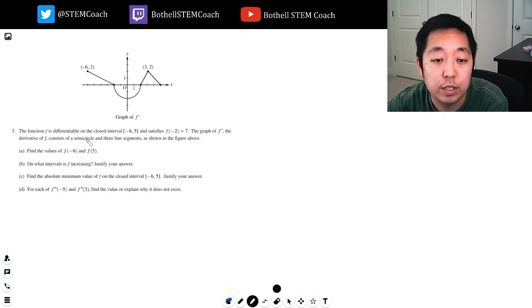The function f is differentiable on the closed interval negative six to five and satisfies this equation. I have the graph of f prime, the derivative of f, which consists of a semicircle and three line segments as shown in the figure above. Find the values of f of negative six and f of five.